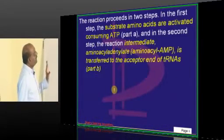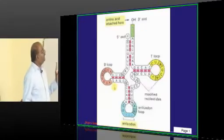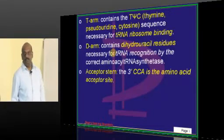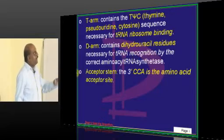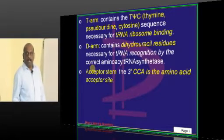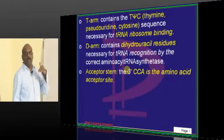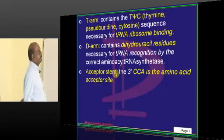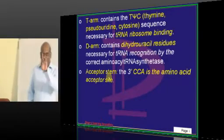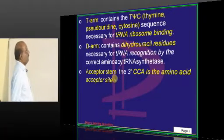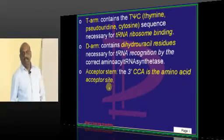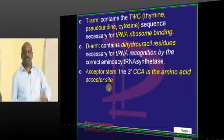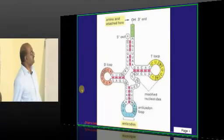The D arm has a dihydrouracil residue that helps the correct aminoacyl tRNA synthetase recognize the tRNA. Then there is an acceptor stem — the 3' CCA end — which is called the acceptor stem, and it receives the amino acid and holds it.